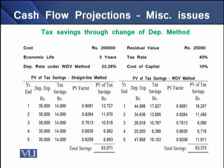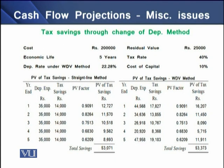On the screen, you can see a comparison of tax savings through the change of depreciation method. We have data including a cost of 200,000 rupees, residual value of 25,000 rupees, economic life of five years, tax rate of 40%, and cost of capital of 10%, with the depreciation rate under written down value method computed at 22.28%. The total tax savings under the straight line method are 53,071, whereas under the written down value method they are 53,373, confirming that the written down value method ensures more tax savings for a capital project.